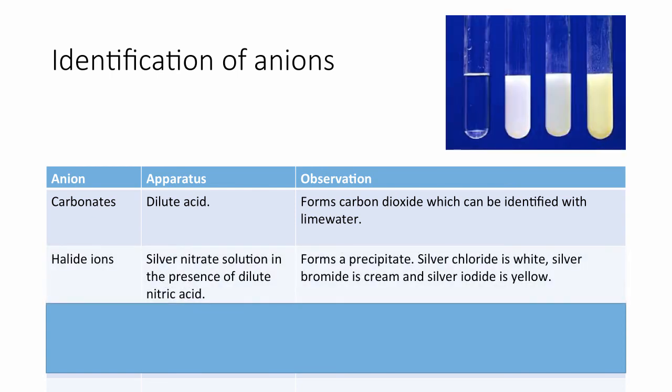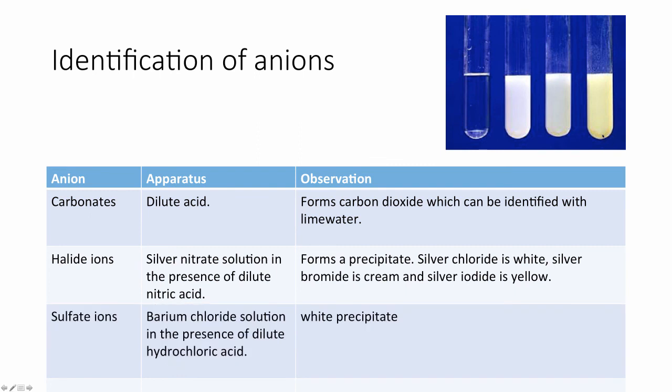Halide ions - so chloride, bromide and iodide - are identified by adding silver nitrate acidified with dilute nitric acid. They will form a precipitate. And the colour of the precipitate indicates which halide is present. So silver chloride is white, silver bromide is cream, silver iodide is yellow.